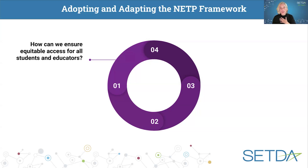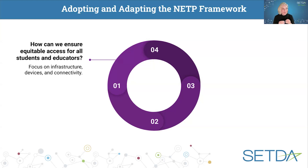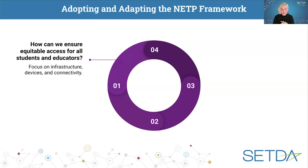A question that a state board can ask is: how can we ensure equitable access for all students and educators? Some things to focus on are infrastructure, devices, and connectivity. And while it's not ed tech specific, there are lots of school buildings where construction is happening. What are we doing in the construction process to make sure those are spaces where digital access and devices can work? Building with cinder block might not be an option anymore because that can block your Wi-Fi.